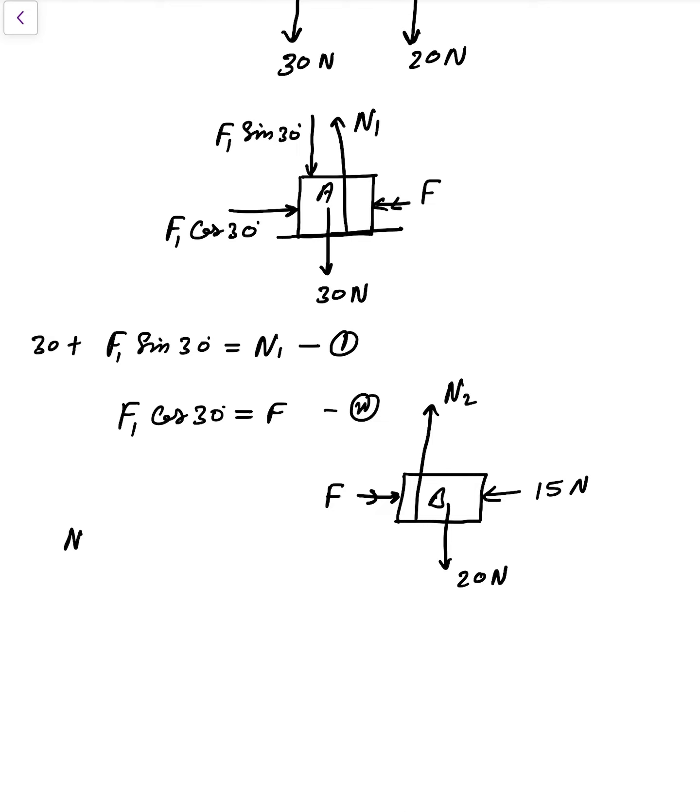Now if block B is not moving, it means N2 balances 20 Newton, and F equals 15 Newton. So F is put here, then F1 cos 30 equals 15.